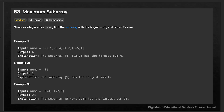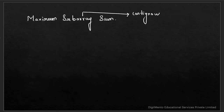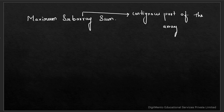This is one of the most interesting questions: maximum subarray sum. A subarray is a contiguous part of the array. Contiguous means elements are in sequence with no gaps between them.